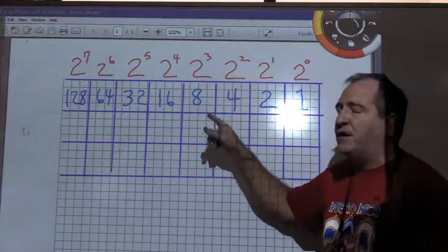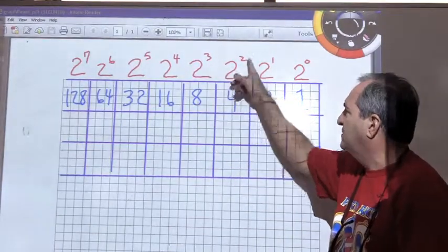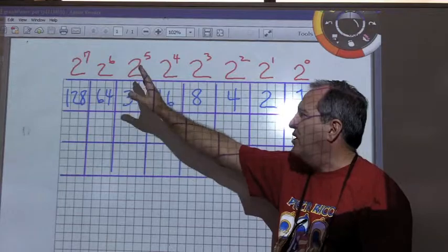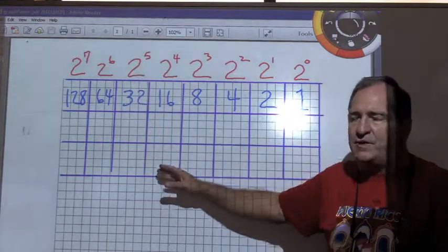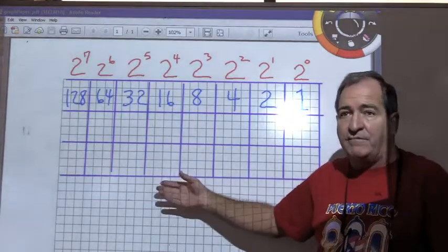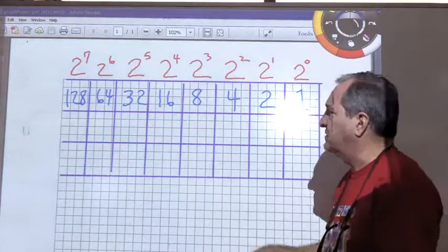2 to the 3rd is 2 times 2 times 2 is 8. 2 squared is 4, and so forth. So, I've gone out to 2 to the 7th, and I'm probably not going to need that, but if I should have a big number, I may need this.